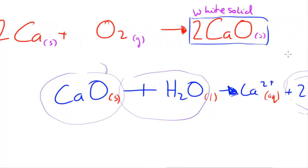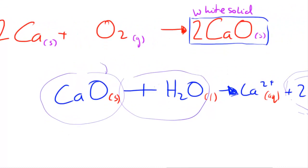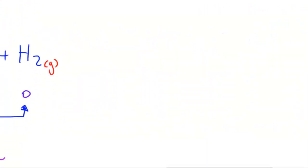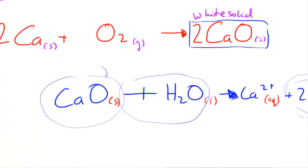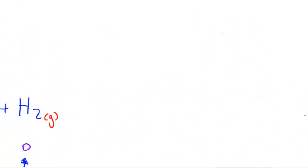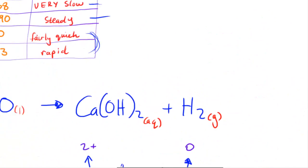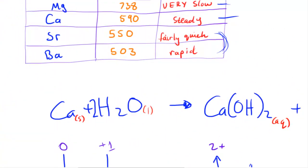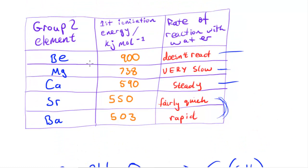It's worth noting that magnesium oxide and beryllium oxide (BeO) are not really soluble in water, because they have a tendency to resist reaction with water.